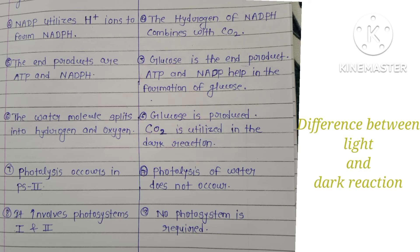In light reaction, photolysis occurs in photosystem 2. In dark reaction, photolysis of water does not occur. Light reaction involves photosystems 1 and 2, while in dark reaction, no photosystem is required.